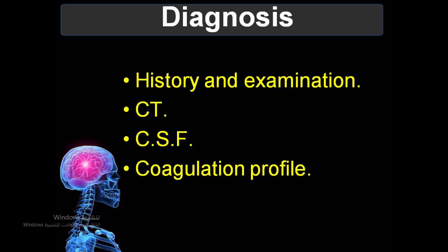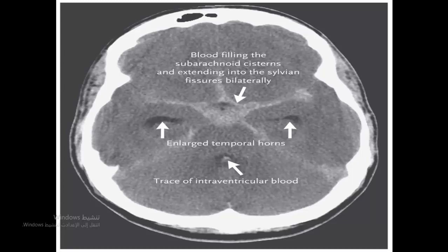On imaging, findings include compressed ventricles and a shifted midline, which are visible on CT. Hemorrhage will be clearly apparent. These are two important CT findings in subarachnoid hemorrhage: compressed ventricles and midline shift.